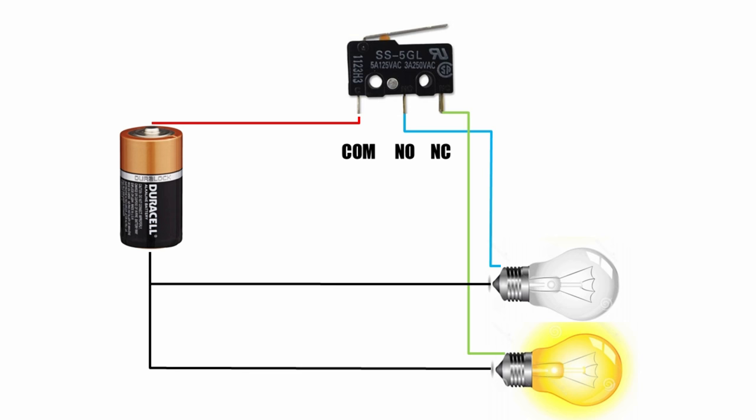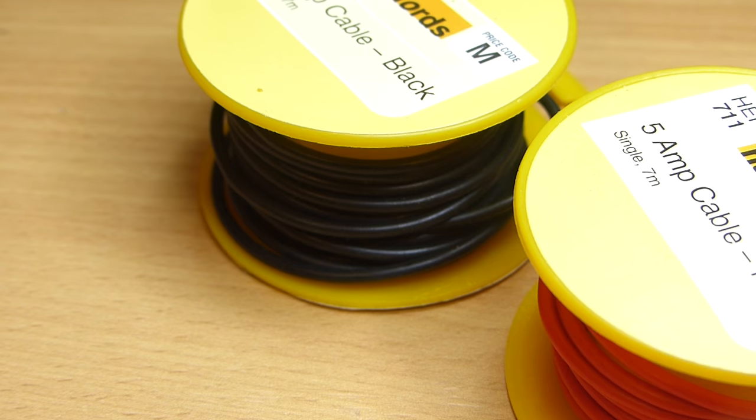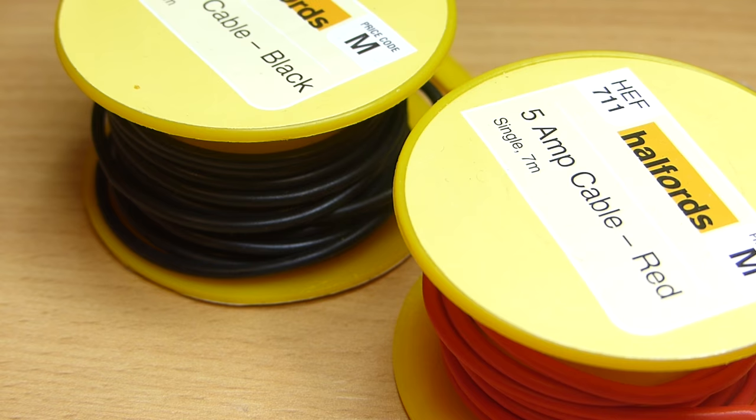Before we start soldering, let's see what you'll need along with the micro-switch. You will need some wire. I'm using red and black 5 amp wire, but you should use whatever suits your current needs.